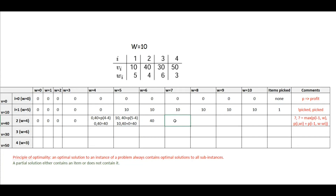Next is w equal to 7. If we do not pick the item, profit is 10. If we pick up this item, our profit is going to be 40 plus profit from the remaining weight, which is 7 minus 4 equals 3. P3 is still 0. So we are getting either 10 or 40 plus 0, which gives us 40. Similarly we will get the same value for w equal to 8.